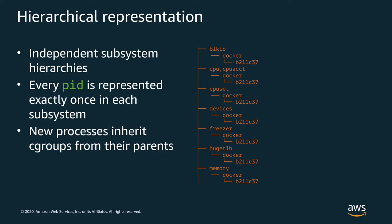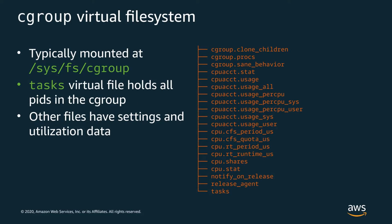Independent hierarchies allow for more expressive segmentation across resource types. This allows you to have two processes share total memory consumption but give one process more CPU time than the other. Some resource controllers apply settings from the parent level to child levels, while others consider each level independently. When a new process is started, it begins in the same cgroups as its parent. You can interact with cgroups via a virtual file system, typically mounted at /sys/fs/cgroup.